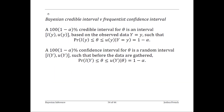Bayesian credible intervals differ from frequentist confidence intervals in some very important ways. The Bayesian credible interval conditions on the data being fixed and assumes that the parameter is random — the random parameter is in the fixed interval with a specific probability. Another way of thinking about it is that if we draw a value of theta from the posterior distribution, the probability is 1 minus alpha that the sampled value will be in the interval. The frequentist confidence interval, by contrast, conditions on the parameter being fixed and the data being random: if we draw independent samples of data from our population, the interval produced by the confidence interval procedure will contain the fixed parameter value with probability 1 minus alpha.